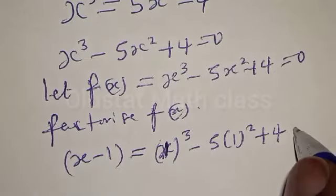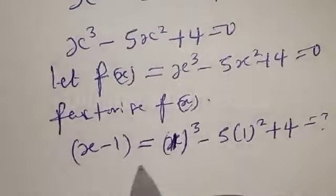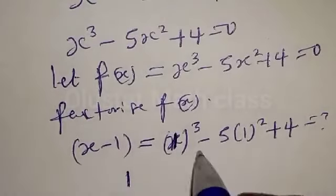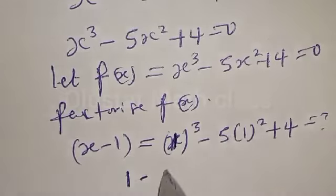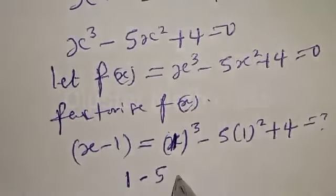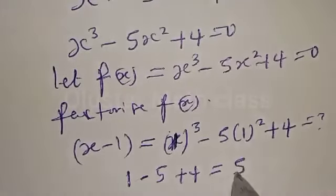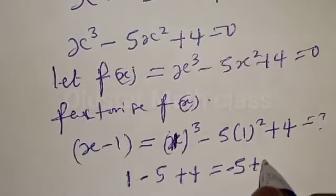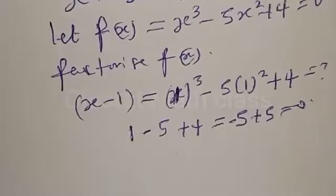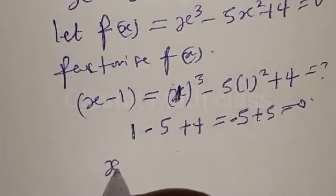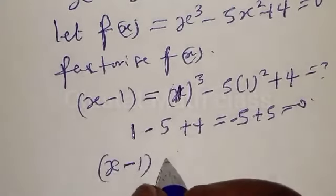We substitute s equal to 1: we have 1³ minus 5 times 1 squared plus 4. That gives us 1 minus 5 plus 4, which is equal to 0. Therefore s minus 1 is a factor.